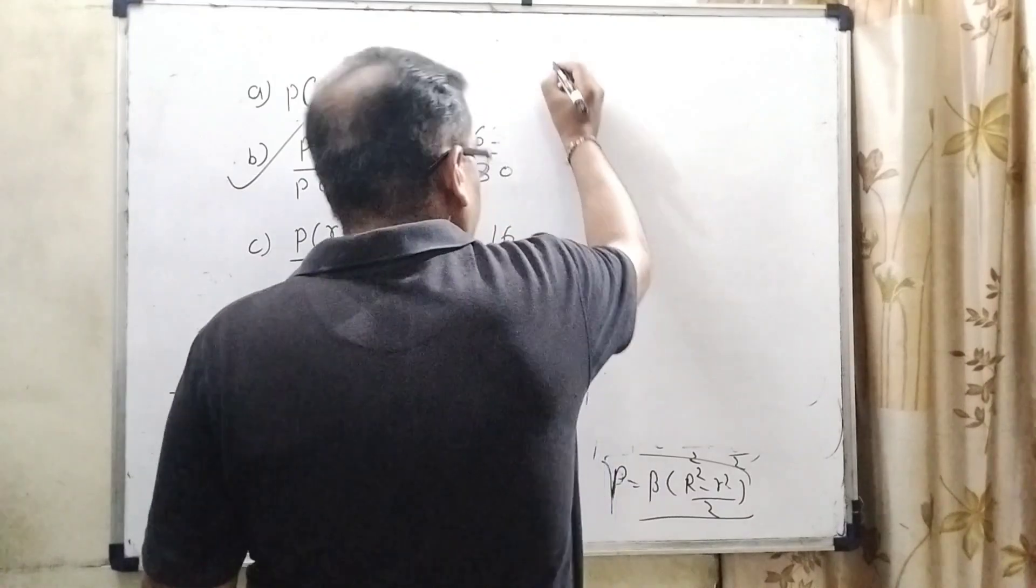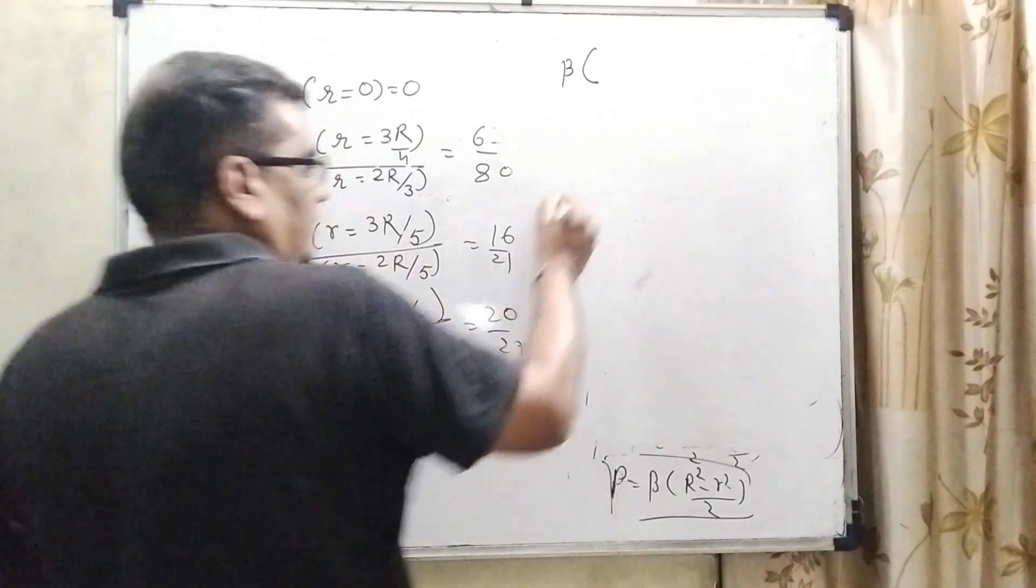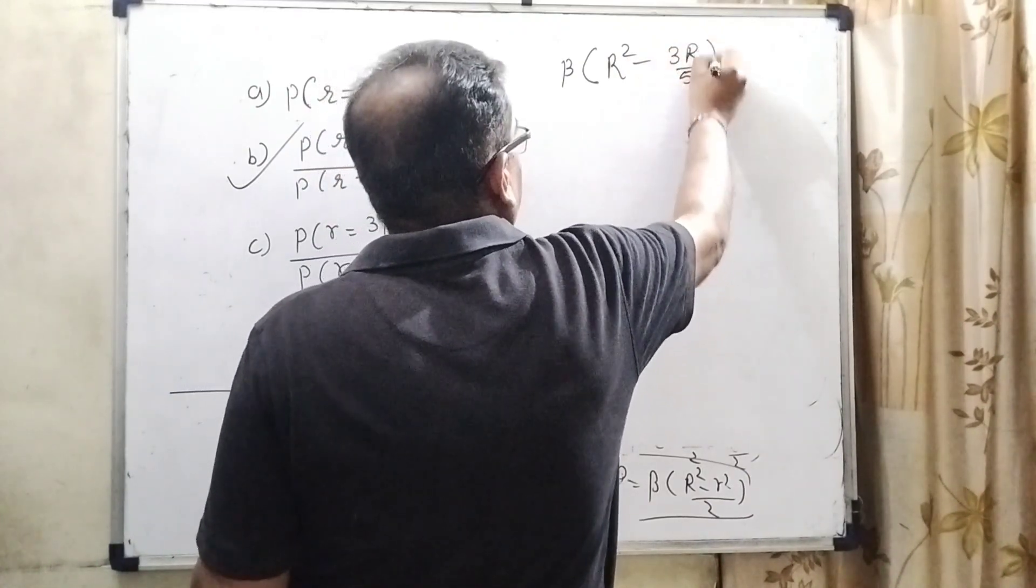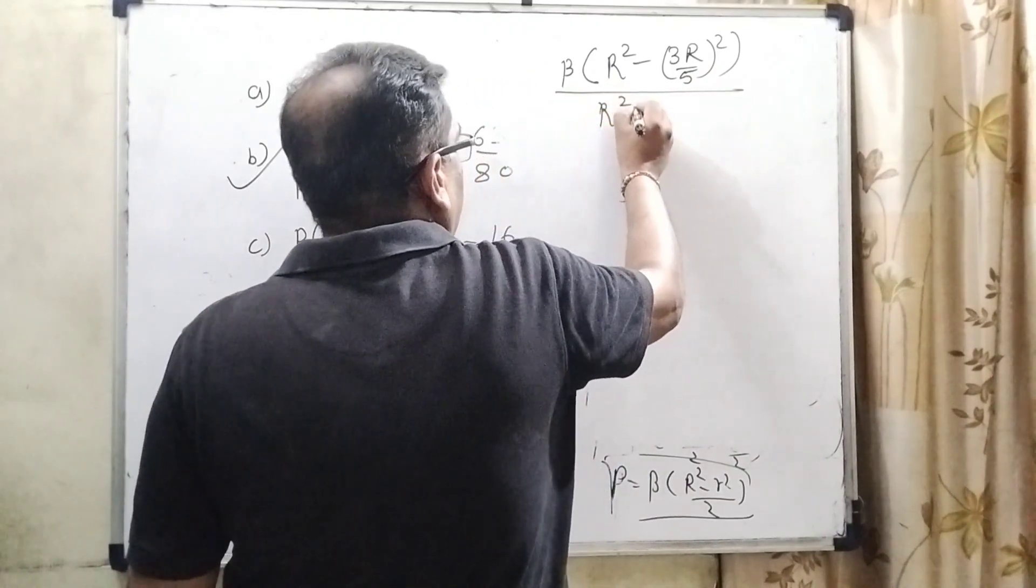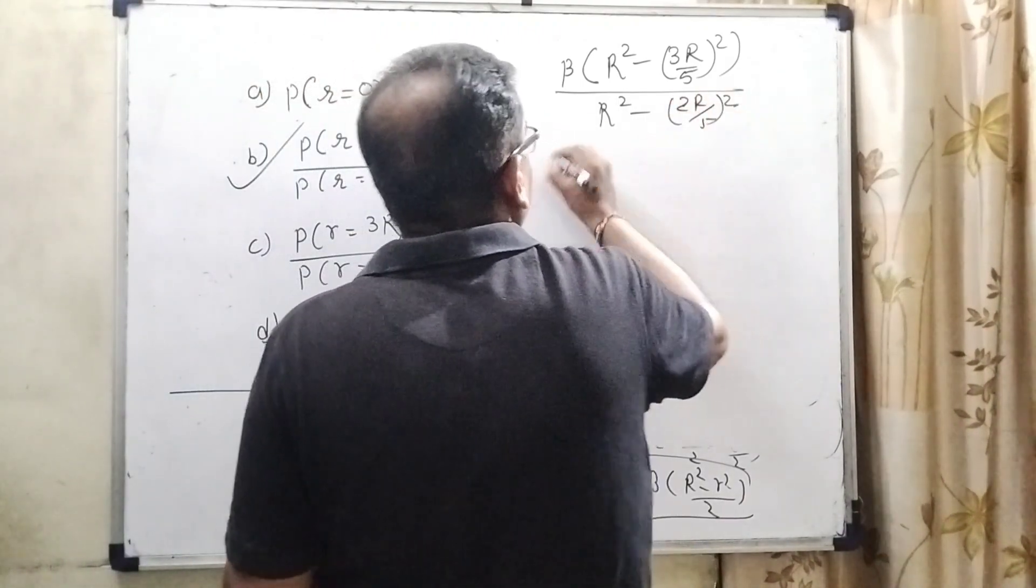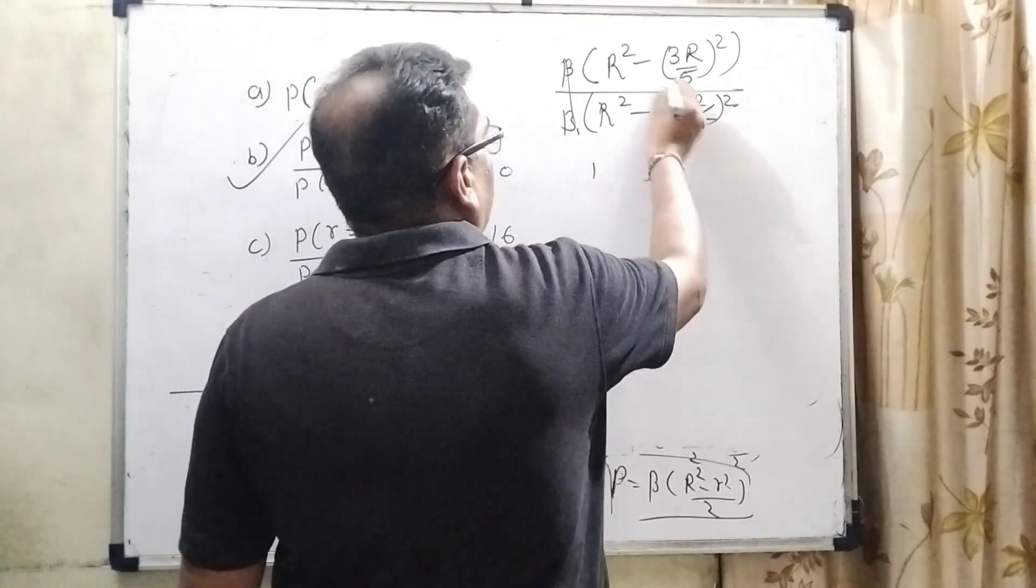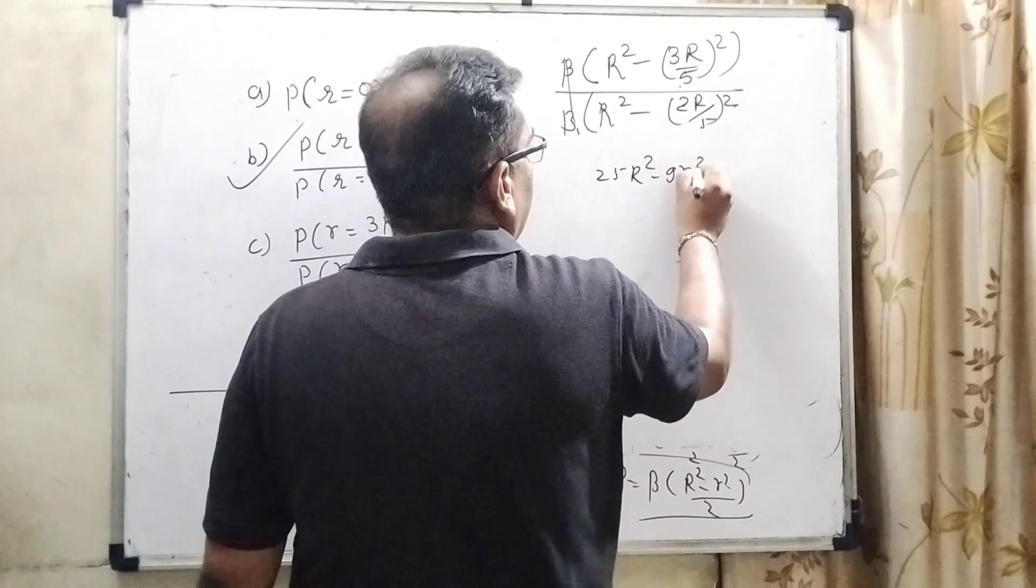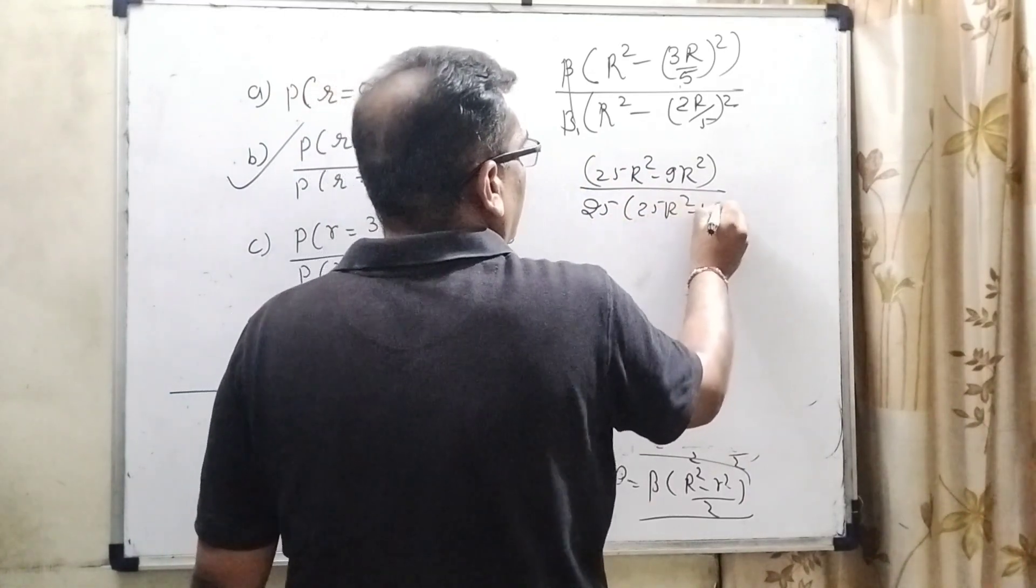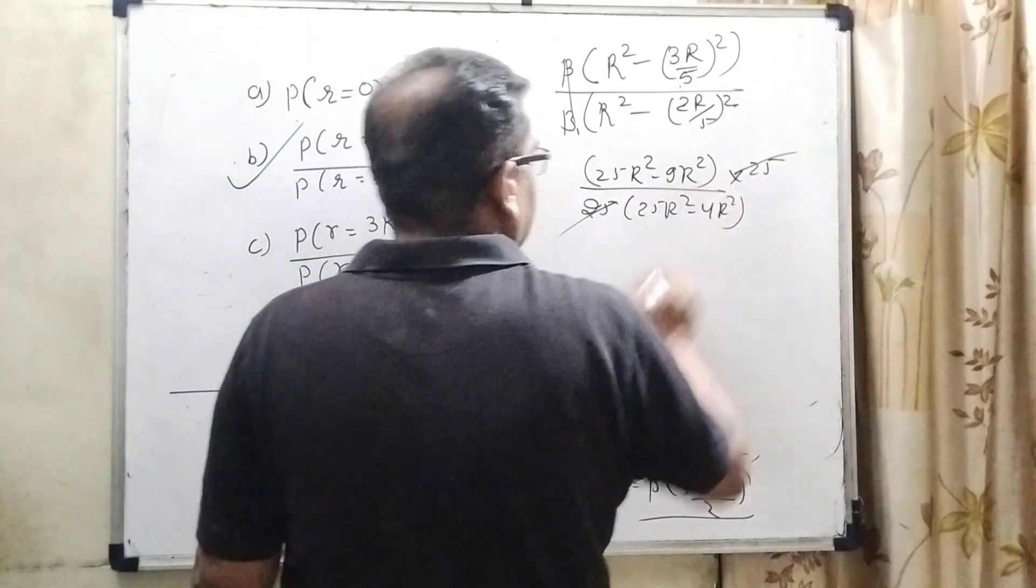For the C option, here beta into bracket, what is the value given? 3R by 5. Then r square, 3R by 5 square, and again r square, what is the value, 2R by 5, 2R by 5 square. Cancel out, upon 2 upon 2 already cancelled out. This 25 r square minus 9 r square, 4 r square, and this 25 goes into numerator. 25 cancels out. How much? 16 r square.